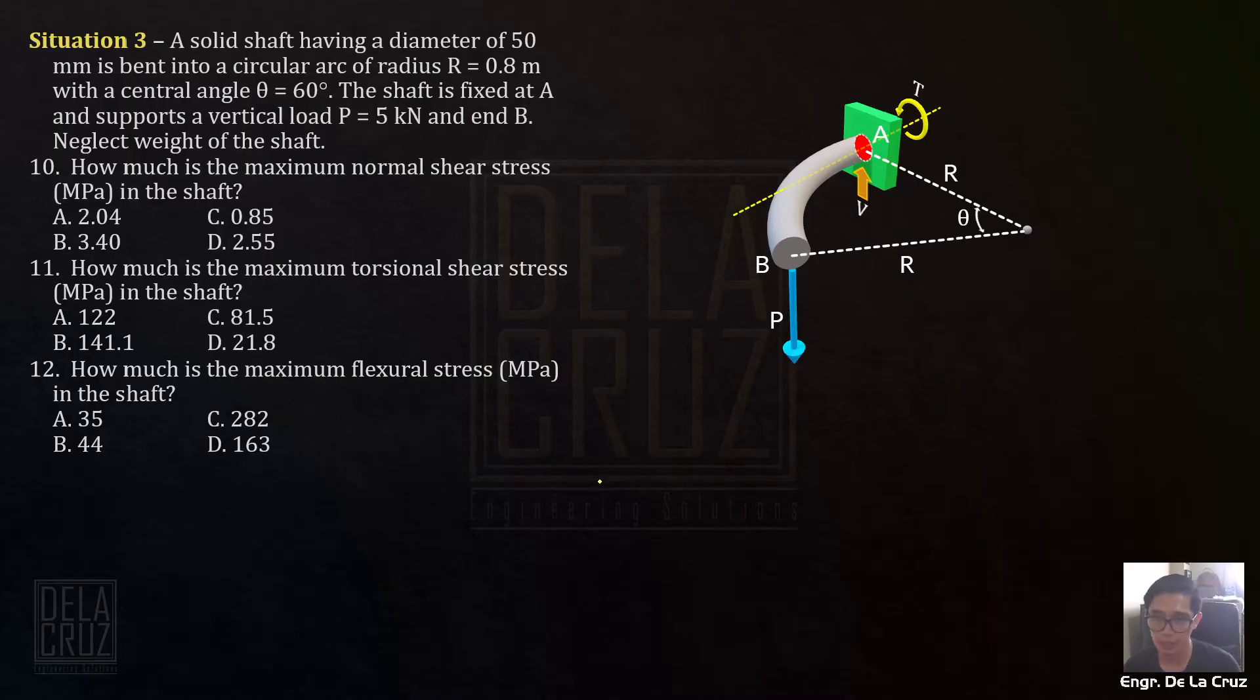This is what we'll use for torsional shear stress. For the maximum flexural shear stress, it will involve bending moment. What's the difference between bending moment and torsional moment? The torsional moment is parallel to the cross section, while the bending moment is perpendicular to the cross section. This is the bending axis at the fixed support. The moment reaction is here. Why at the fixed support? Because the longer the distance from the point of load application, the greater the moment. So maximum torsional moment and bending moment occur here.